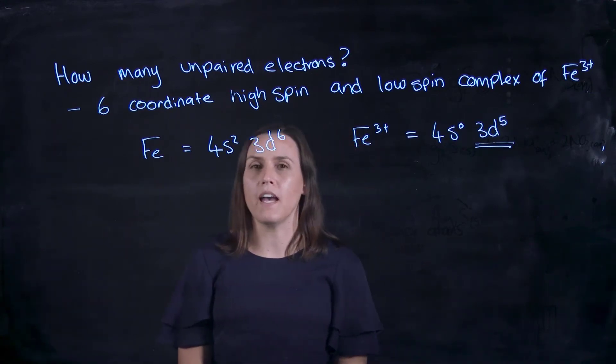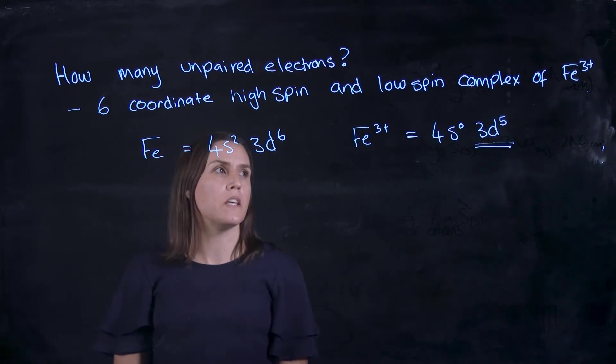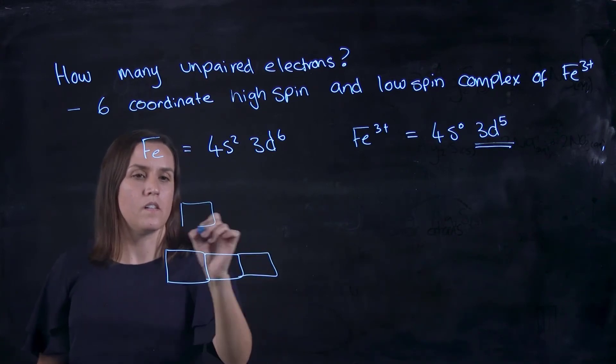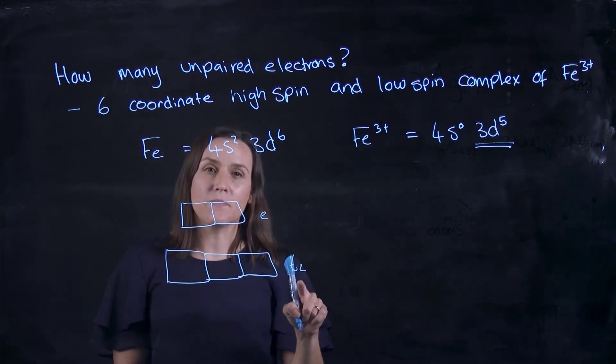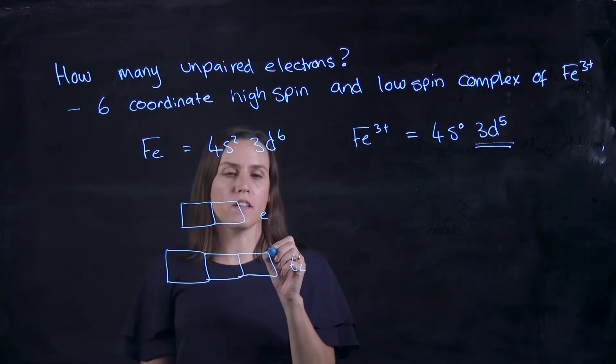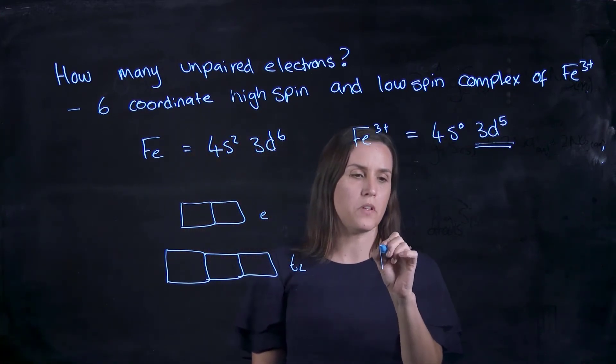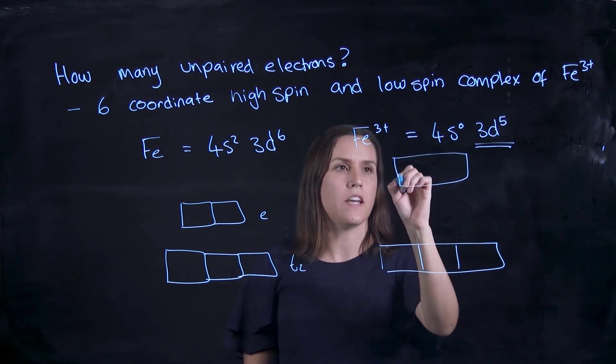So writing out my 6-coordinate high spin and low spin with 5 electrons. The bottom one is my T2 set and my E is at the top. This is when we have a very small energy gap. I'll draw a larger gap between the blocks for the next one. So this is our larger energy gap.